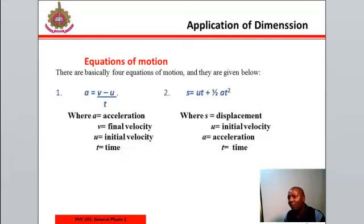The second one is a function of distance: x equal to ut plus a half at squared, where x is the displacement and all other parameters are as defined on this plane.